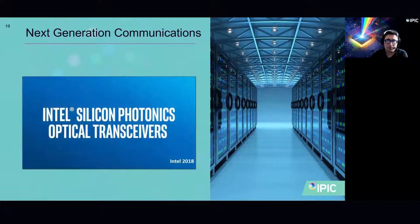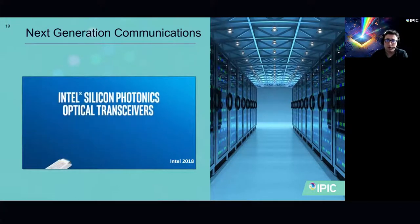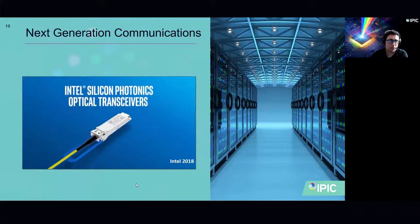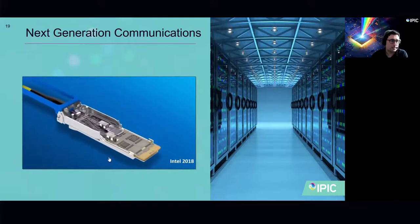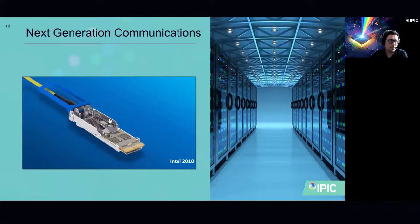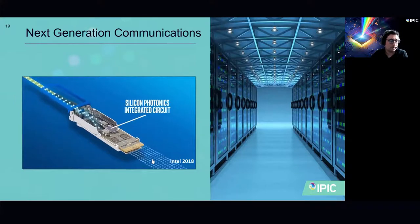The next generation of optical transceivers are starting to use photonic integration to increase performance. Here we see an example from Intel where they're showing how their latest transceivers actually work. At the core of these transceivers is a photonic integrated circuit based on the silicon platform that you can see here. The electrical signal from a data center or from a server gets converted to an optical signal by this photonic integrated circuit. Then they can leave the transceiver and go to another transceiver or another data center or another part of the network.